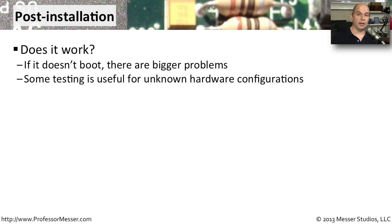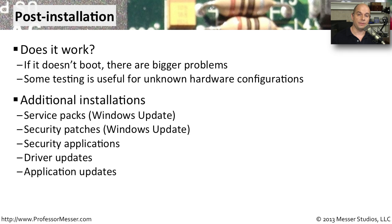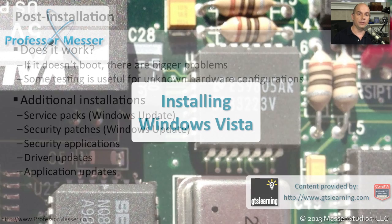Before we start using this computer in production, we need to make sure that this new operating system is going to work properly with our hardware, so some initial testing should certainly be done. We also need to update the operating system — make sure it's running the latest service packs and all the latest security patches. Make sure you've installed security applications like anti-virus and anti-malware. There are probably drivers that need to be updated, so download those from the manufacturer's website. Finally, install any needed applications and then we can turn the computer over to our end users.